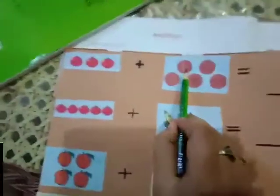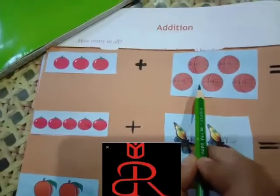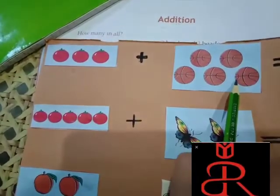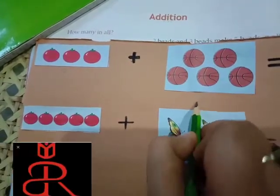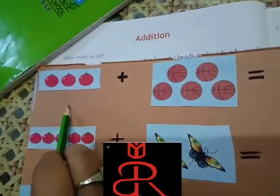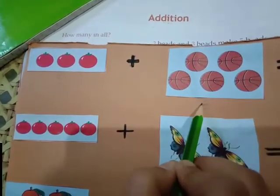And then, count the number of balls. One, two, three, four, five. How many balls we have? Five. So, now, if we will add three and five together, what the answer will come?